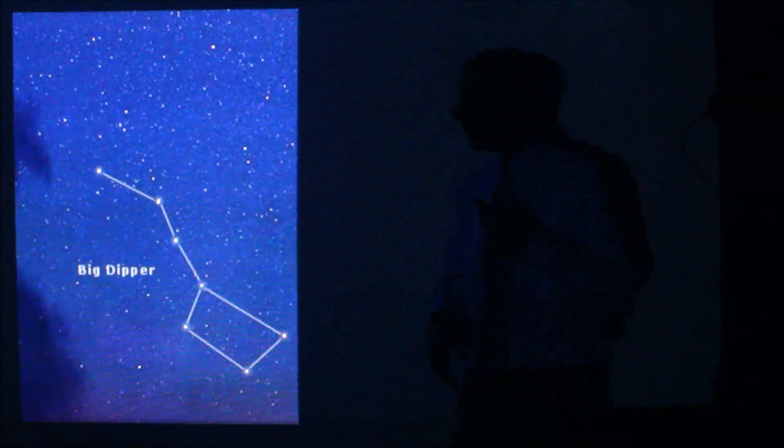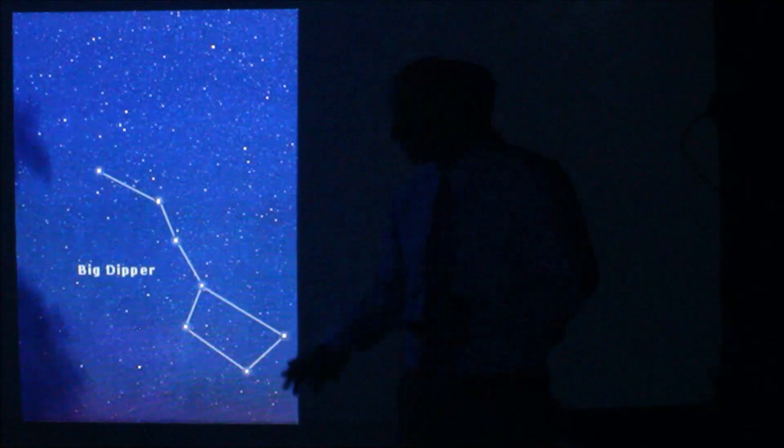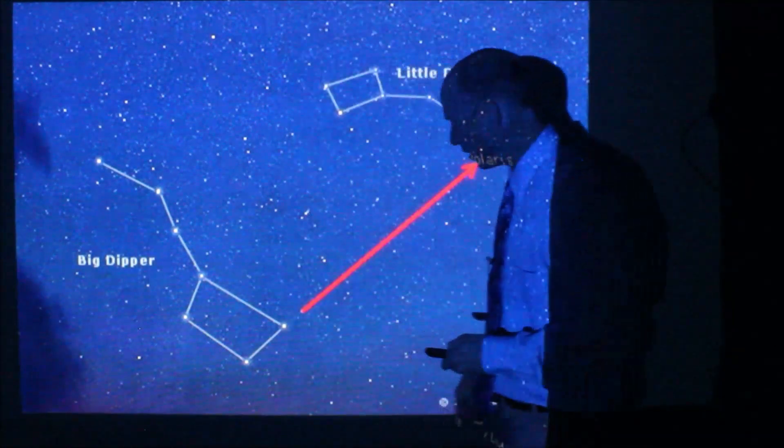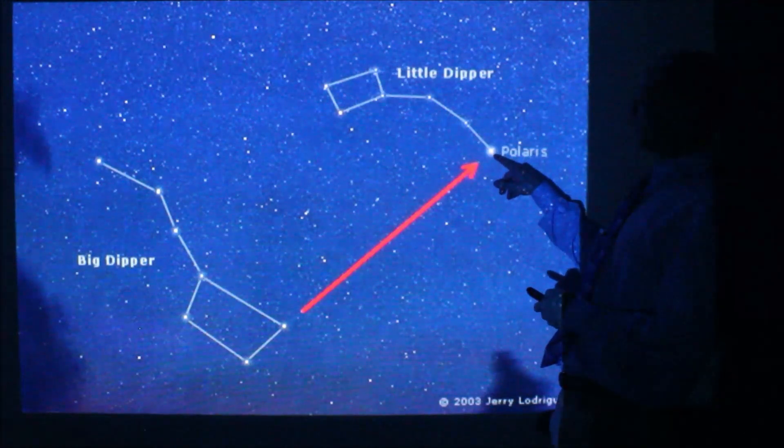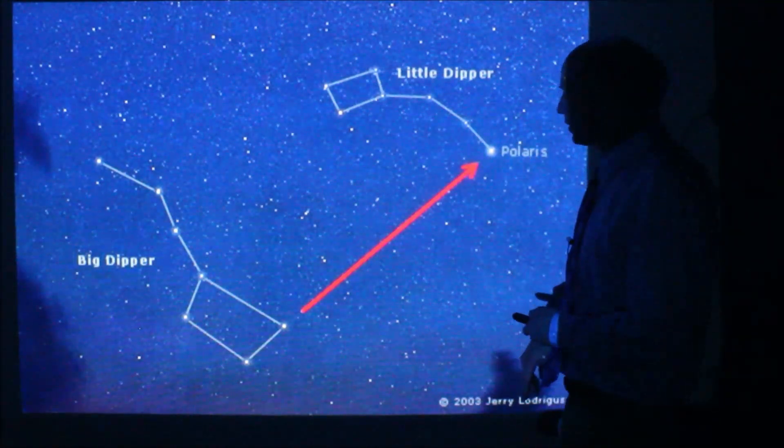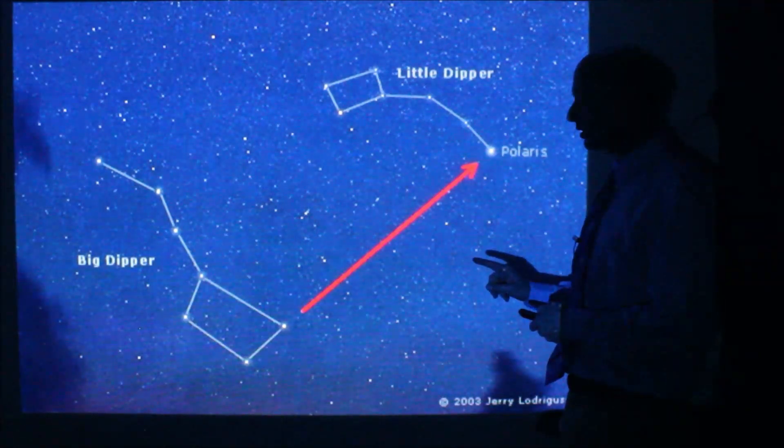So first, how do you find Polaris in the nighttime sky? Well, the big dipper is the first thing to find because these two stars are going to help you because these two stars are your pointer stars. They point out to Polaris here, which happens to be the last star in the handle of the little dipper. This is important to know.